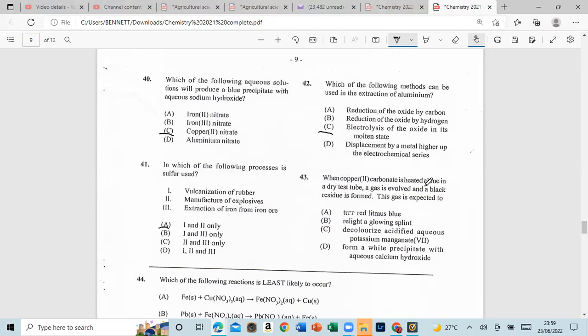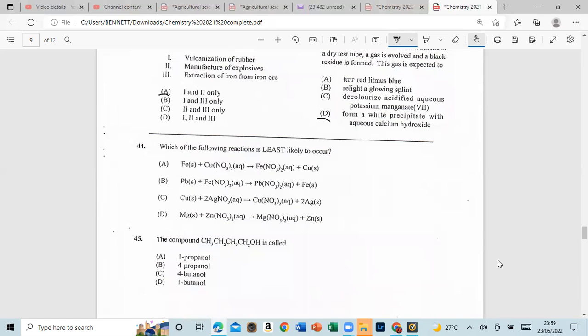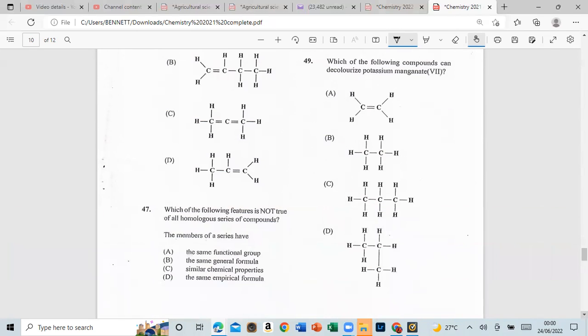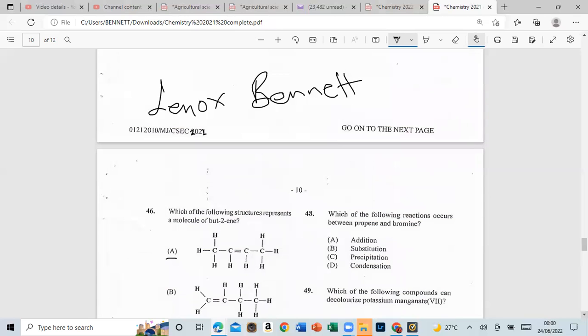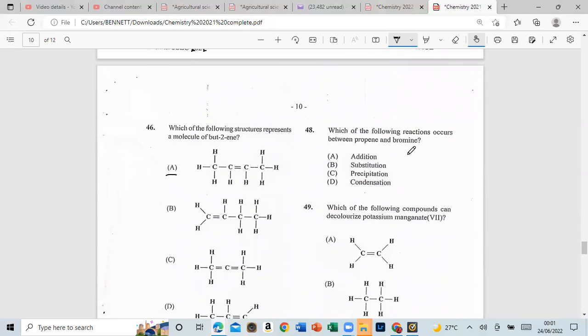Number 43, when copper(II) carbonate is heated alone in a dry test tube, a gas is evolved and a black residue is formed. This gas will turn white precipitate in calcium hydroxide. Number 44, which of the following reactions is the least likely to occur? Number 45, which of the following features is not true of a homologous series? The members of the series have basically the same functional group, the same general formula, similar chemical properties, or the same empirical formula? And that's the same empirical formula. Number 48, which of the following reactions is addition, substitution, precipitation, or condensation? And that is addition.